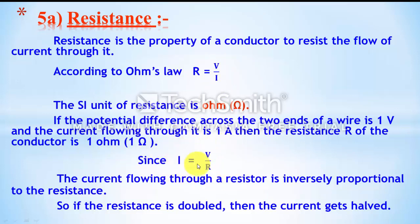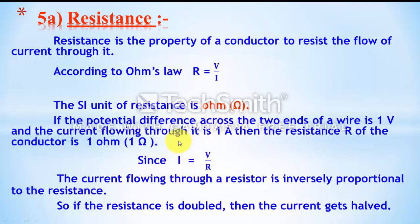If voltage remains constant, current through the resistor is inversely proportional to resistance. Increasing resistance decreases current — doubling the resistance halves the current. Resistance is the property to resist the flow of current, so increasing resistance means more resistance to flow, resulting in less current.